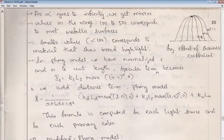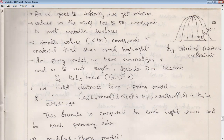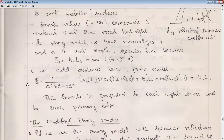Substituting equations two, three, and four into equation one, we get the total intensity contribution at point P — the complete Phong equation: I = (K_D / (a + bD + cD²)) × max(L · N × L_D, 0) + K_S × L_S × max(R · V^alpha, 0) + K_A × L_A. This is our Phong equation, which we will use in the teapot lab program using OpenGL commands to specify the values.